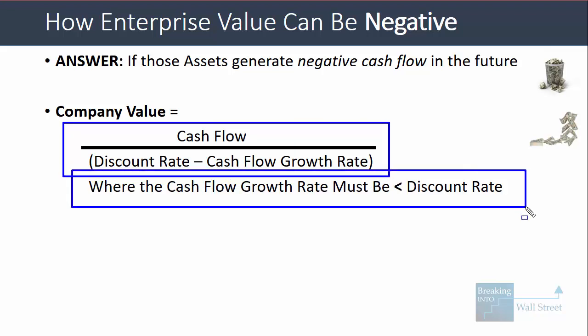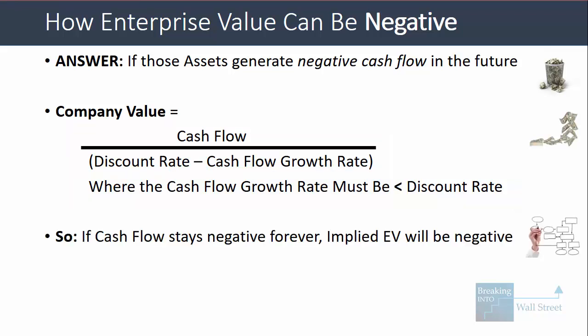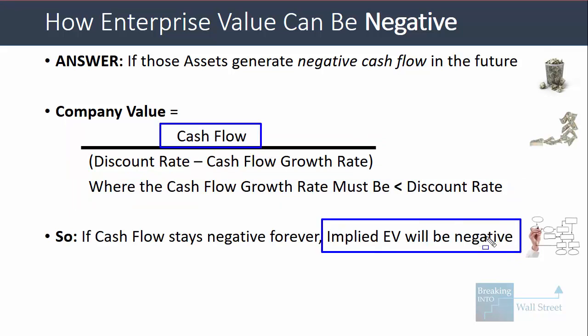You can value a company in a steady state by taking its cash flow and dividing by the discount rate minus the cash flow growth rate, where the growth rate must be less than the discount rate. This is the basis for the terminal value formula in a DCF. You can see from this formula that if a company's cash flow is negative and stays negative forever, its implied enterprise value must be negative — the denominator is always positive, so a negative numerator makes the whole formula negative.